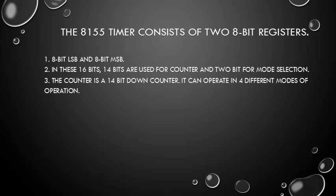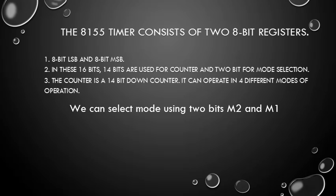The 8155 timer consists of two 8-bit registers — 8-bit least significant byte and 8-bit most significant byte. In these 16 bits, 14 bits are used for the counter and two bits for mode selection. The counter is a 14-bit down counter that can operate in four different modes of operation.